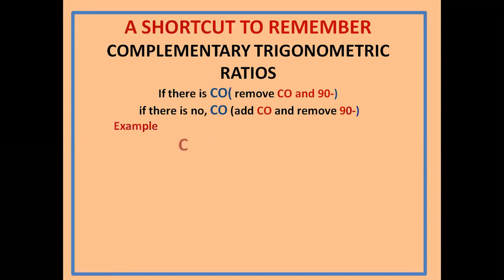cos(90 minus θ): there is 'co', so remove 'co' and '90 minus'. Then you get sin θ.